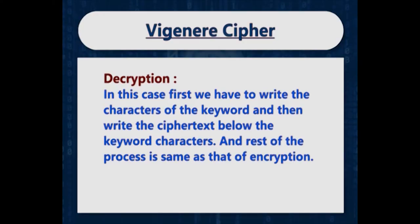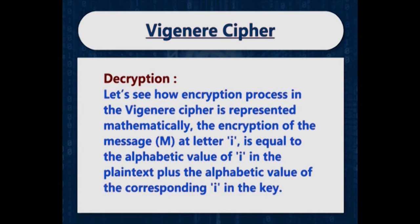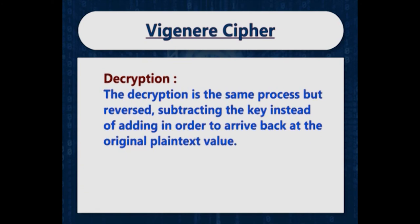This is how we use the Vigenère table to convert plaintext to ciphertext. Decryption follows the same procedure — write the keyword characters and then write the ciphertext below the keyword characters, and the rest of the process is the same as encryption. Mathematically, encryption is expressed as: M(i) = plaintext(i) + key(i), and decryption reverses this by subtracting the key instead of adding. The Vigenère cipher was an improvement upon previous encryption techniques but is still vulnerable to brute force attacks and frequency analysis, though to a lesser degree than the Caesar cipher.